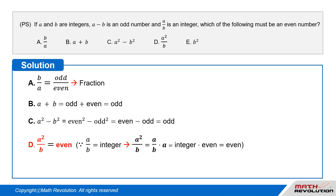This will be even, as we know that A over B is an integer. And A squared over B equals A over B times A equals integer times even equals even. This option is very important. In particular, it is important to understand that A over B equals an integer, A equals even, and integer times even equals even.